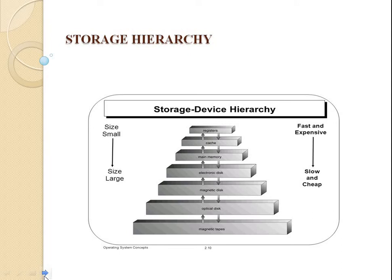Storage hierarchy: the main memory unit is an essential component of any digital computer, needed for storing programs and data. The memory hierarchy consists of all storage devices employed in a computer system, from slow but high capacity secondary memory to faster main memory. Consider this picture — from top to bottom, cost decreases and access speed also decreases, but from bottom to top, storage capacity decreases and access speed increases.